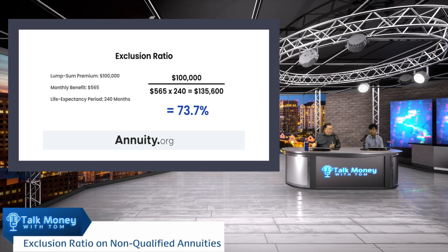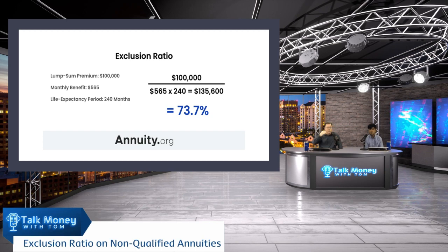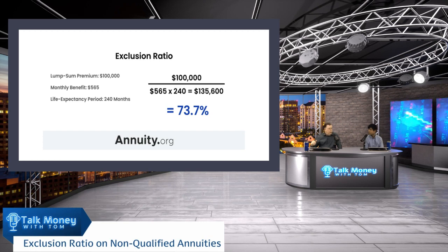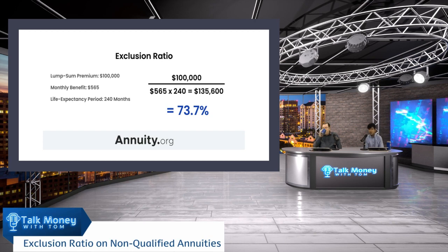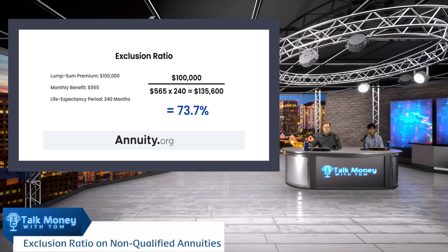That's what you're going to pay tax on, at least for that 240 months. So 73.7% — which is the result of that division problem — means 73.7% of your payment is going to be tax-free; the rest is going to be taxable. The U.S. government doesn't like double taxing, so whenever you put in money that you've already paid taxes on, they don't want to tax you again. Return of capital is always tax-free because you've been taxed on it previously.